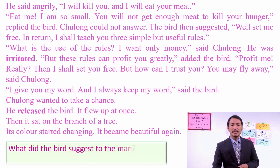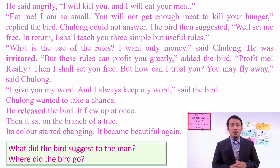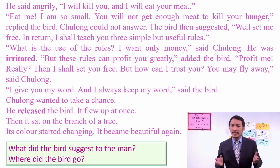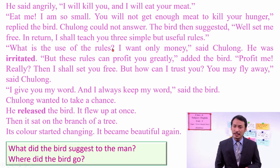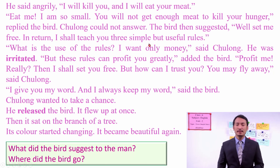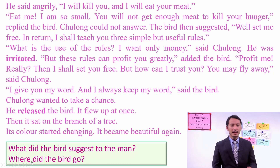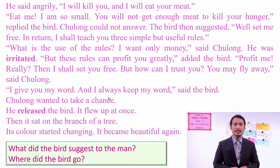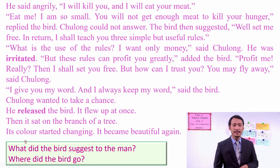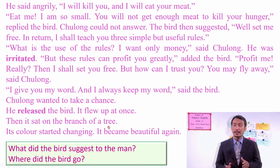What did the bird suggest to the man to get the profit? The suggestion was to set the bird free, and in return the bird would teach three simple but useful rules. Then where did the bird go after the man set it free? It flew away and sat on the branch of a tree.